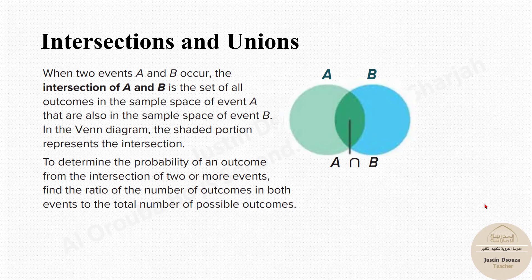Now, intersections. Let's look at the Venn diagram. This is the Venn diagram of A, and this is the Venn diagram of B. If you're wondering what a Venn diagram is, it's just a diagram which shows characteristics of events A and B. Now, if the two diagrams are overlapping — you can see this part is overlapping — that means that part of A and B are common. That overlapping part is called the intersection.